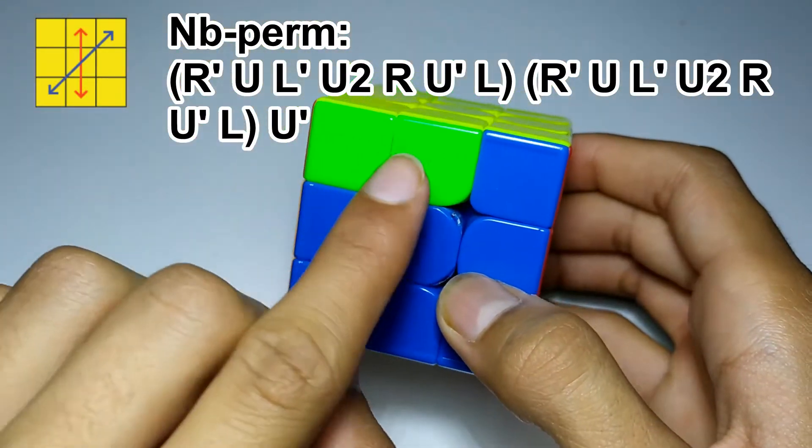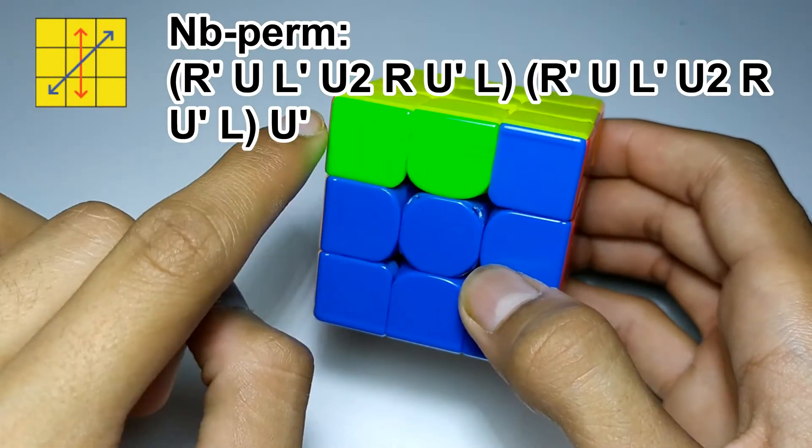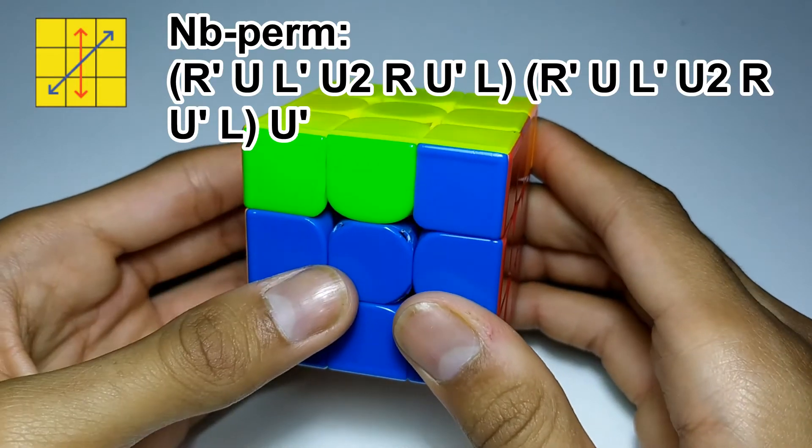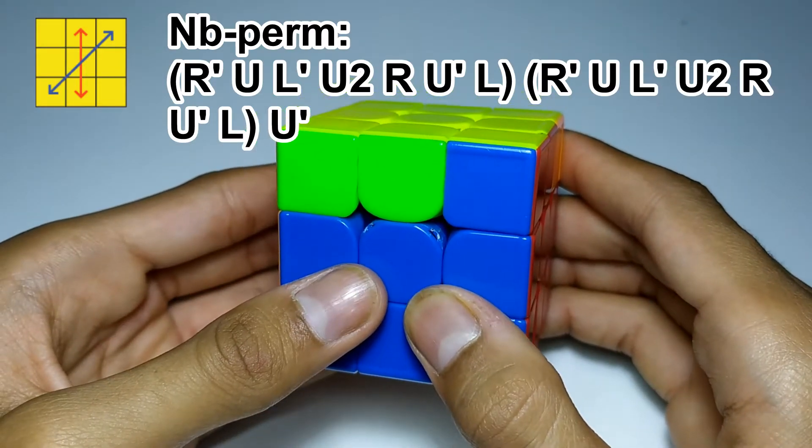And the second algorithm, the one with the blocks on the left, is the N-B-perm. This algorithm is similar to the J-A-perm. In fact, it's just the first section of the J-A-perm, twice.